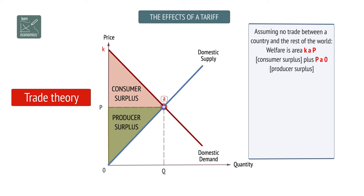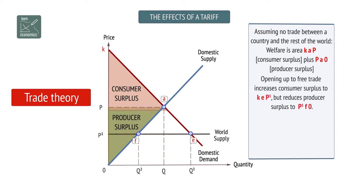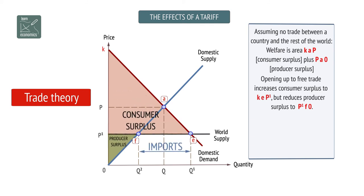Opening up to free trade increases consumer surplus to KEP1, but reduces producer surplus to P1F0.